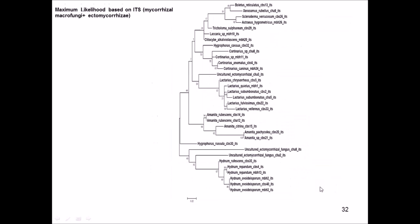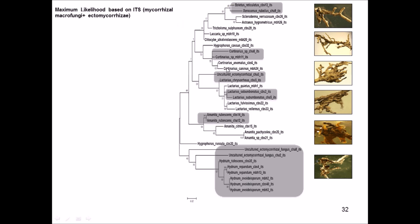I also constructed a combined phylogenetic tree mixing mycorrhizal fungi and ectomycorrhizal sequences to see if there is any link between ectomycorrhizal organisms growing in the roots and the fruiting bodies above the soil. I found good matches, such as Lactarius subdulcis from ectomycorrhizal samples and fruiting bodies, and similarly for Amanita rubescens, Cortinarius, Boletus reticulatus, and Hydnum repandum.